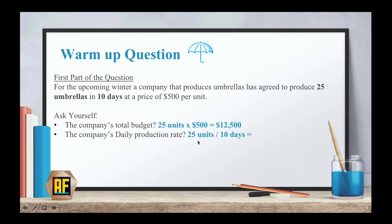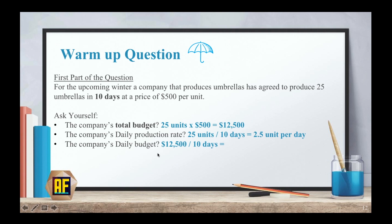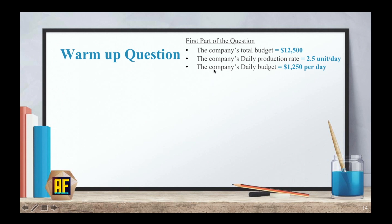The company's daily production rate is 25 units over 10 days, which equals 2.5 units per day, or 5 units every 2 days. The company's daily budget, which is the total budget over the total number of days, is $1,250 per day. Now that we know that, we can put everything we calculated on the upper right part of the screen and continue to the second part of the question.